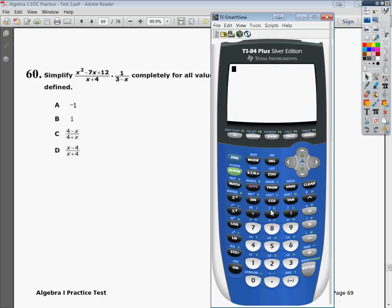So what we're going to do is make it look exactly like this up here. So the first thing that I'm going to do is put the x squared minus 7x in parentheses. So I get x squared minus 7x plus 12. Then I'm going to close that, and I'm going to divide it by x plus 4.